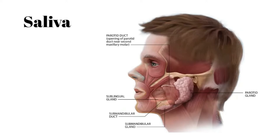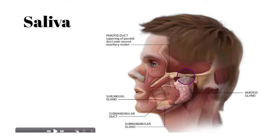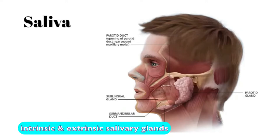The parotid gland is immediately anterior to the external acoustic meatus. These three glands — parotid, submandibular, and sublingual — are referred to as extrinsic salivary glands. There are also intrinsic glands embedded directly into tissues of the mouth, such as the tongue, gingiva, and soft palate.